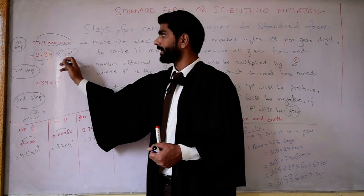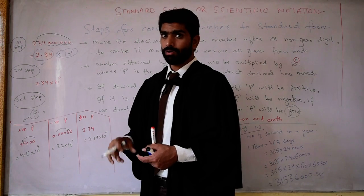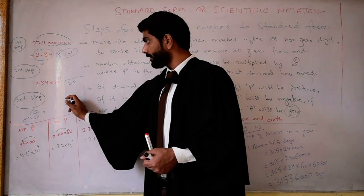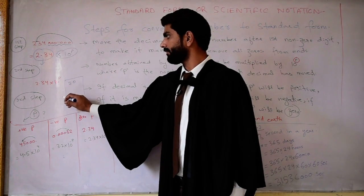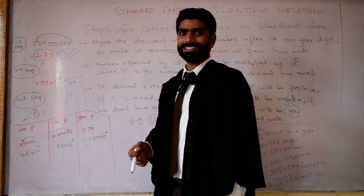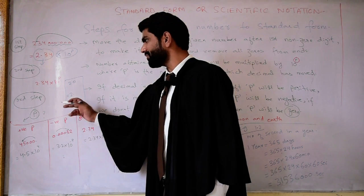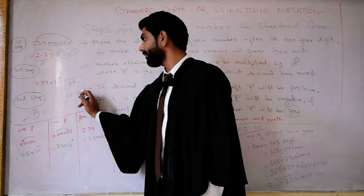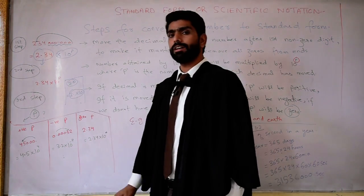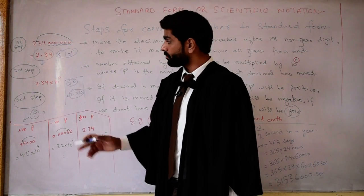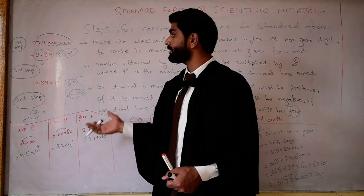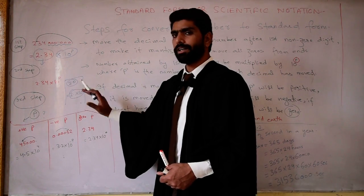We multiply this number with the power of 10. For example, we can write 20 in the form 2 multiplied by 10 to the power 1, which equals 20. So 20 and this number in scientific form are the same. We can write 20 as 2 into 10 power 1, but we cannot write 20 just as 2 — we have to write it as 2 into 10 to the power 1.